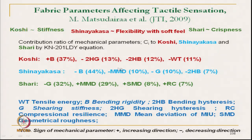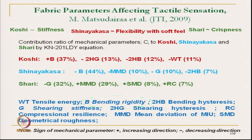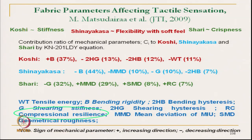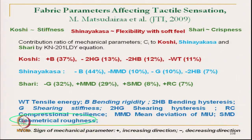Koshi is related to other parameters as well: WT (tensile energy), bending energy, bending hysteresis, shear stiffness, shear hysteresis, compressional resilience, mean deviation of friction coefficient MMD, and geometrical roughness SMD. All these parameters are related to Koshi.